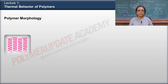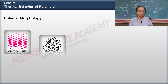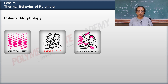This is the crystalline structure. In crystalline structure, the molecules are set in a very definite manner. This is an amorphous structure in which the molecules are randomly set, while in semi-crystalline structure the molecules are settled in a mixed manner. Some regions are crystalline and some regions are amorphous. In some polymers the crystallinity is more, and in some polymers the amorphousity is more.